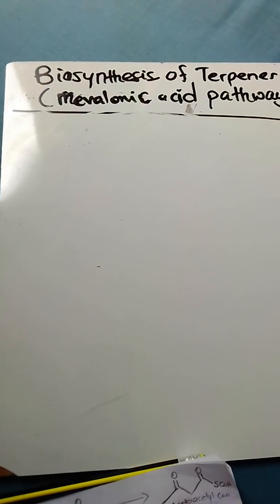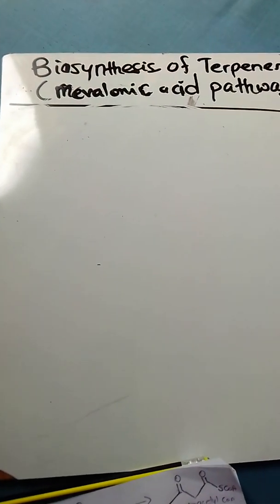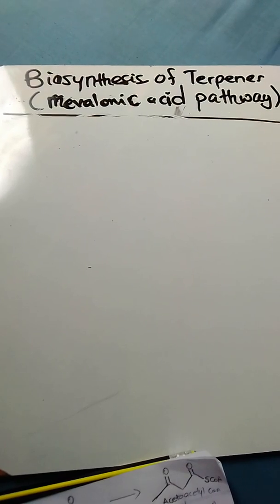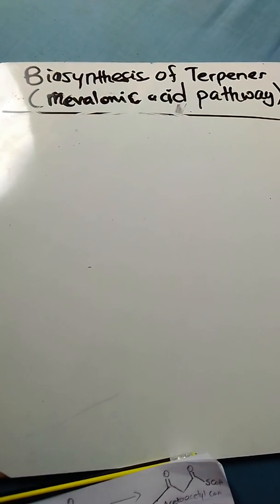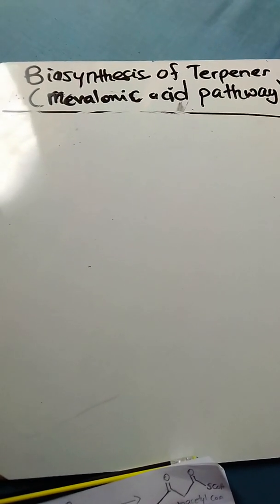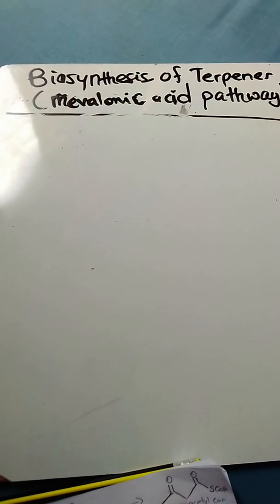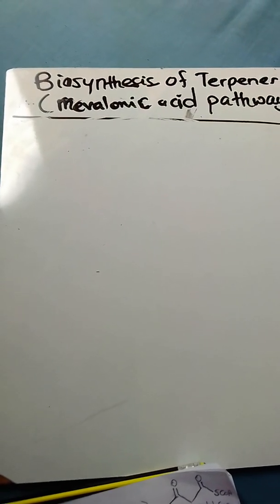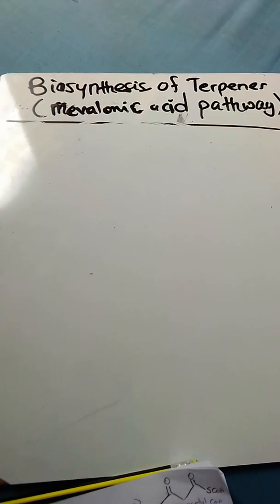Terpenes are basically a group of organic compounds or plant secondary metabolites made of isoprene units. They mostly form parts of plant essential oils. In that case they are mostly extracted from plants through steam distillation.